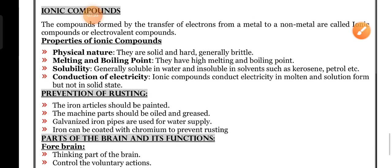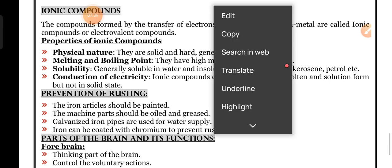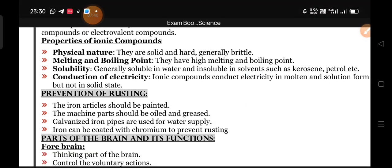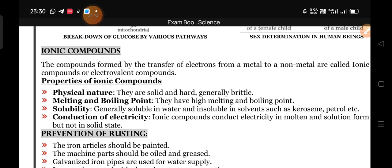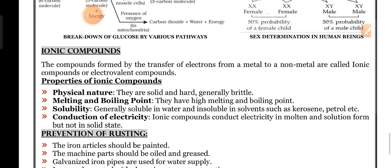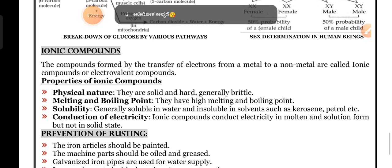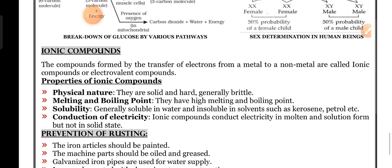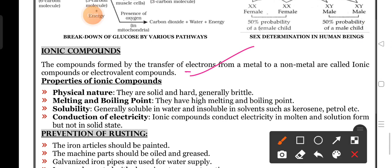Next, we are going to discuss ionic compounds. In your exam, they ask: what are ionic compounds and explain their properties. The compounds formed by the transfer of electrons from metal to non-metals are called ionic compounds or electrovalent compounds.